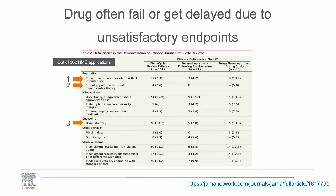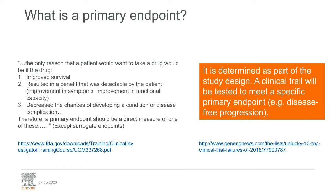Just to make sure that everybody's on the same page — what are these endpoints? I took this definition from the FDA training slide deck. The only reason a patient would want to take a drug is if the drug will improve survival, or result in a benefit detectable by the patient — improvement in symptoms, improvement in functional capacity, or if the drug decreases the chance of developing a condition or disease. Therefore, a primary endpoint should be a direct measure of one of these. There is an exception — surrogate endpoints, which we'll get back to.